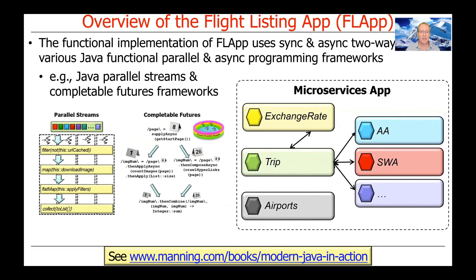The next version is a functional implementation of FLAP using synchronous and asynchronous two-way calls based on Java's functional parallel and async programming frameworks — in particular Java parallel streams and Java completable futures. If you haven't taken those courses, don't worry; I'll provide links to videos you can watch. This demonstrates how functional programming can make systems more effective, responsive, and scalable using Java's functional parallelism and concurrency frameworks.